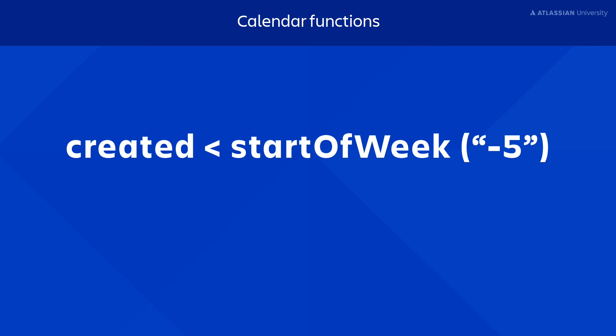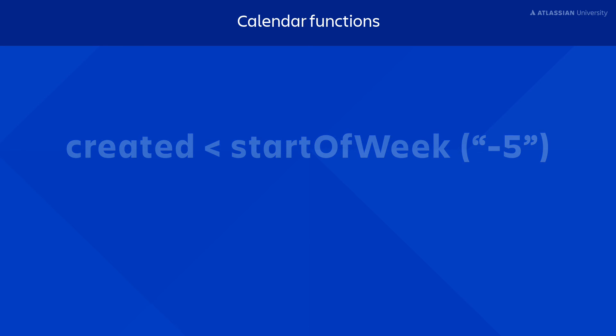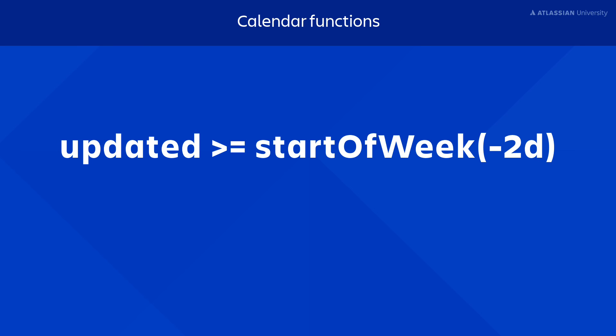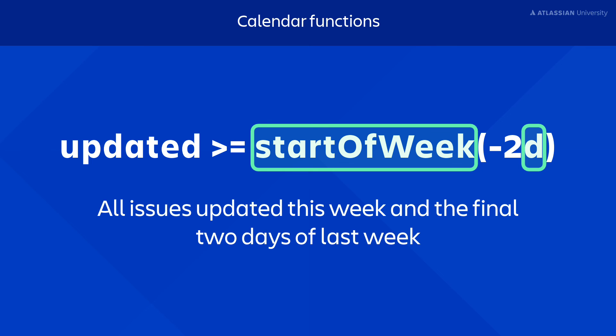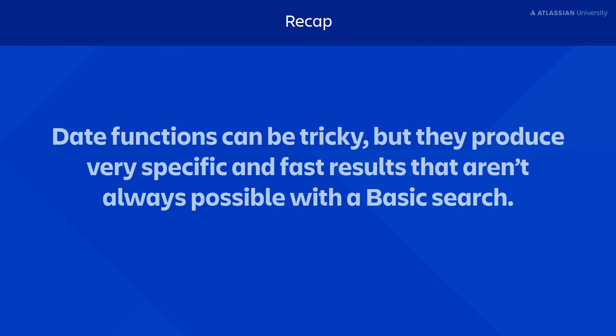Make sure to use double quotes for increments containing a plus or you'll get an error. You can also use an increment that doesn't match the function. For example, the increment D representing day can be used with a function that relates to the week. This will list all issues updated this week and in the final two days of last week. To recap, date functions can be tricky, but they produce very specific and fast results that aren't always possible with a basic search.